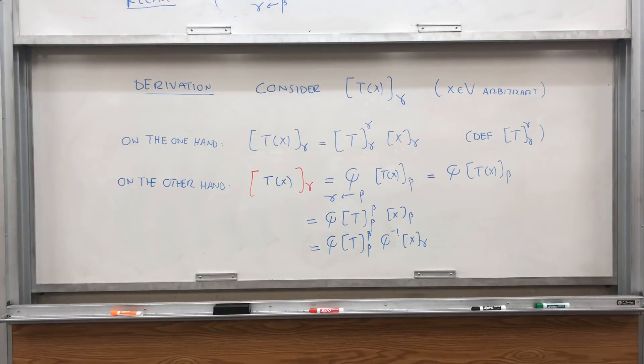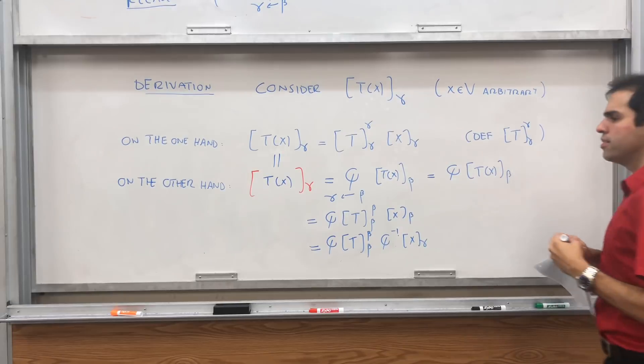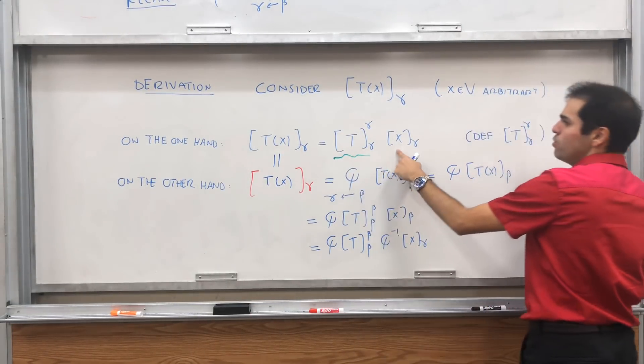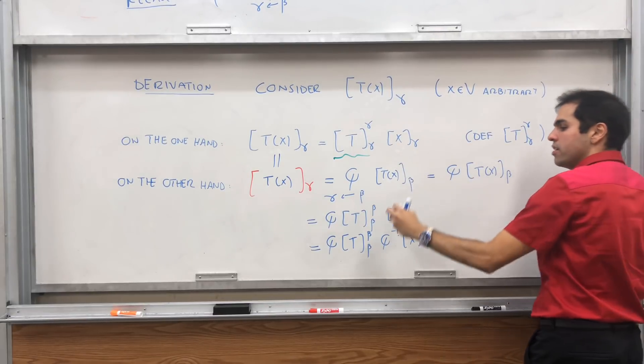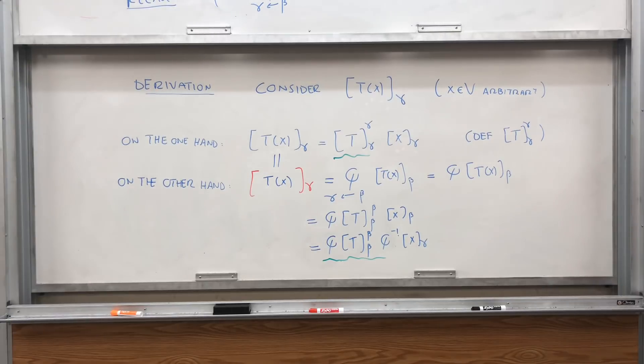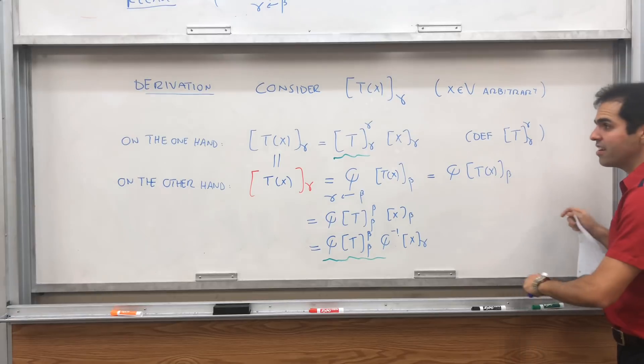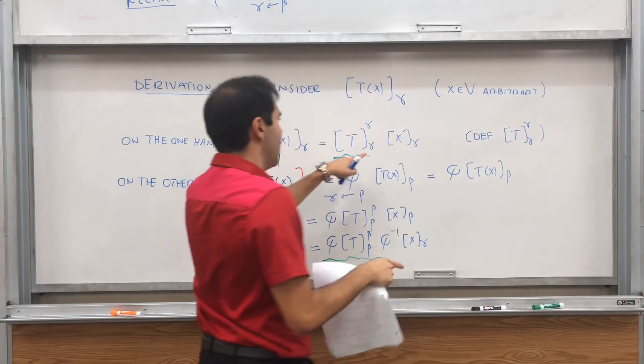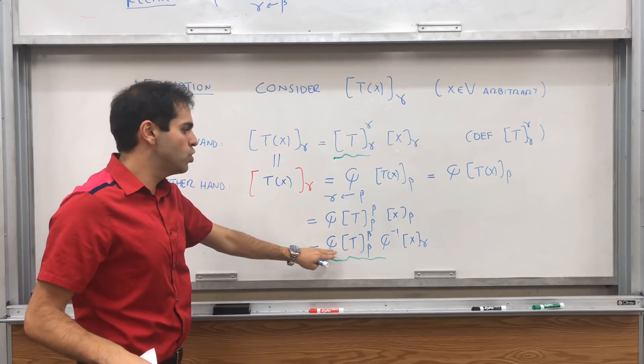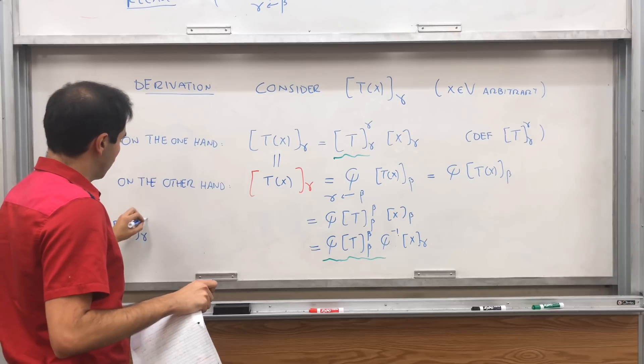This is wonderful, because what do we have? Those two terms are equal. So the new matrix of T applied to this arbitrary vector equals Q T, old matrix of T, Q inverse, applied to the same vector. So in particular, because this holds for every X, we do get that the new matrix of T equals Q, old matrix Q inverse. This is our new formula.